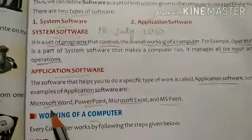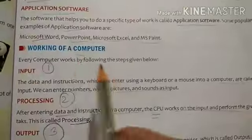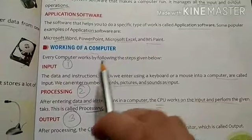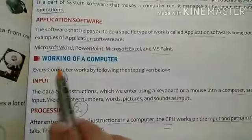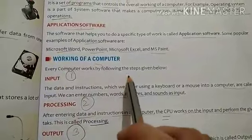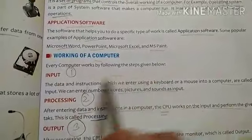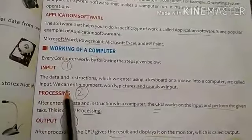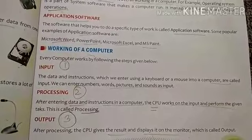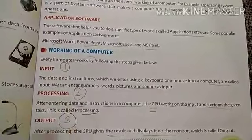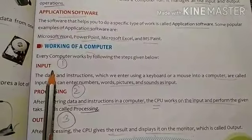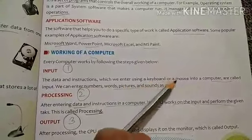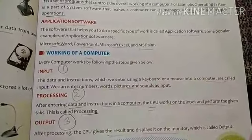There are other examples also: Microsoft Word, PowerPoint, and Microsoft Excel. Now let's begin with the working of a computer. Every computer works by following three main steps. The first one is input, the second is process, and the third is output. The data and instructions which we enter using a keyboard or a mouse into a computer are called input.